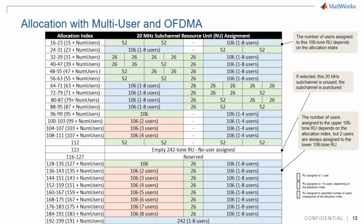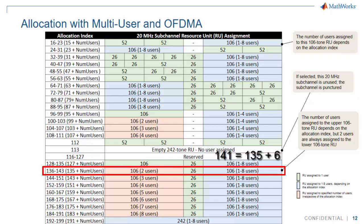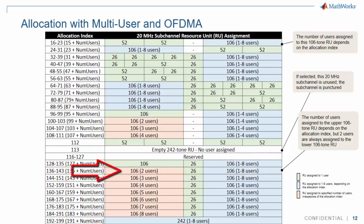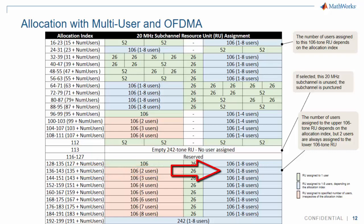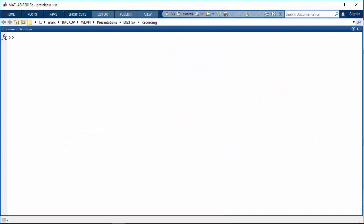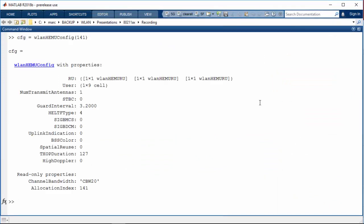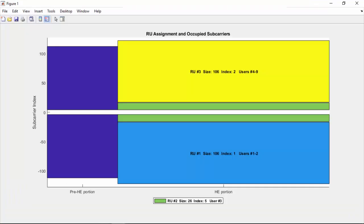Similarly, values 16 through 199 cover combined OFDMA and multi-user MIMO cases in a 20 MHz band. For example, allocation index 141 is 135 plus 6, which means it describes a configuration with two users sharing 106 subcarriers, one single user in the middle, and six users sharing 106 subcarriers in blue. Let's set up this configuration and visualize the resource allocation. We can see users 1 and 2, user 3 in the middle, and users 4 through 9 here.